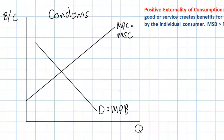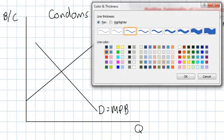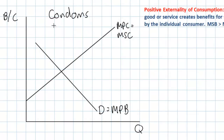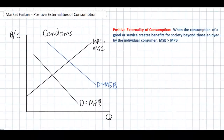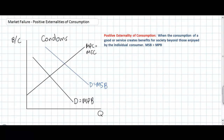The marginal private benefit represents the welfare enjoyed by the men who actually choose to use condoms. They benefit in several ways, but condoms also create what are called external benefits in their consumption, which exceed the private benefits. So we'll actually have a second demand curve on here which represents society's benefits. We'll label this marginal social benefit, or MSB.